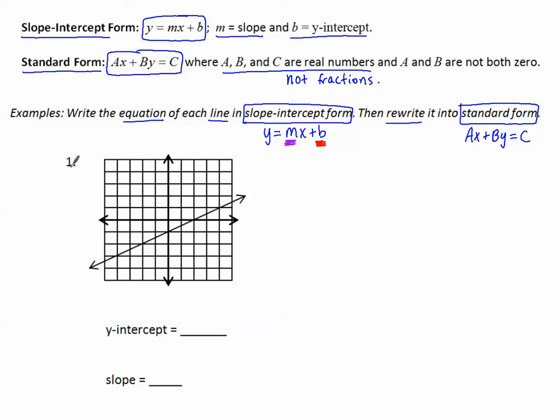So let's look at number one. Given this graph, we're going to start by finding the y-intercept, that is b. We're going to look at the y-axis and find where the graph crosses the y-axis, negative one. Zero comma negative one is the y-intercept, so b equals negative one.